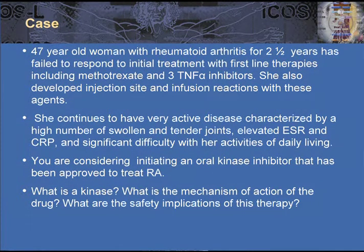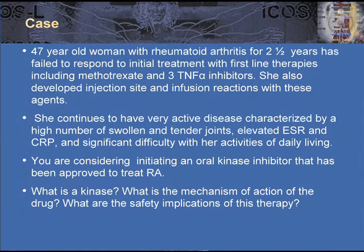I'm going to begin with a case. A 47-year-old woman with rheumatoid arthritis for two and a half years failed to respond to her initial treatment with first-line therapies including methotrexate and three TNF-alpha inhibitors. She also developed injection site reactions and infusion reactions with these agents. She continues to have very active joint disease with a high number of swollen and tender joints, elevation in her acute phase reactants — the sed rate and CRP — and significant difficulty with her activities of daily living. You're now considering starting an oral kinase inhibitor that has recently been approved to treat rheumatoid arthritis. The questions we'll review are: what is a kinase, what is the mechanism of action of the drug, and what are the safety implications of this form of therapy.